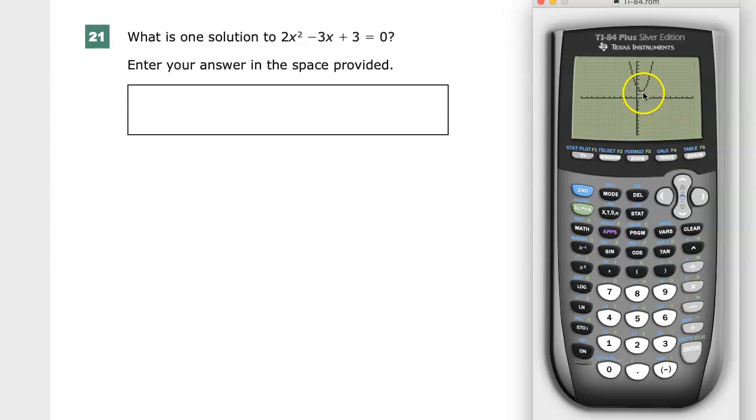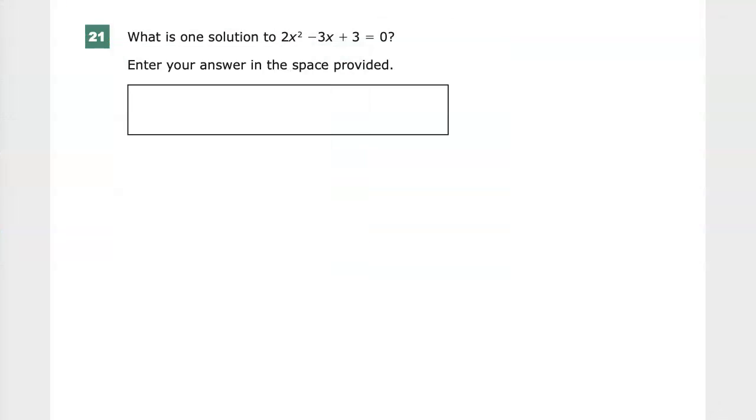And there's the graph. You see it's not touching the x-axis at all. It means it's imaginary. So instead of doing some other method, I would suggest you do one that you can get imaginary numbers with. The easiest one for me, anyway, is just to use the quadratic formula. So negative b plus or minus the square root of b squared minus 4ac over 2a.